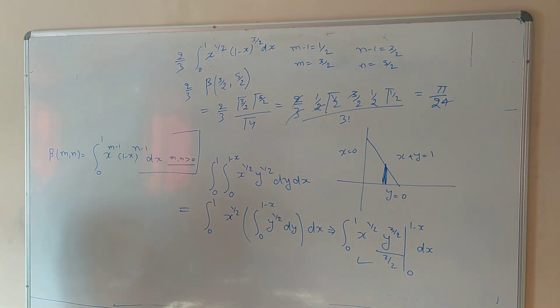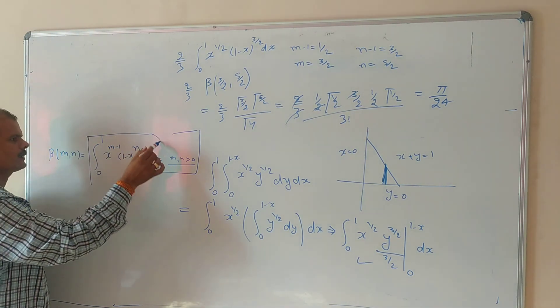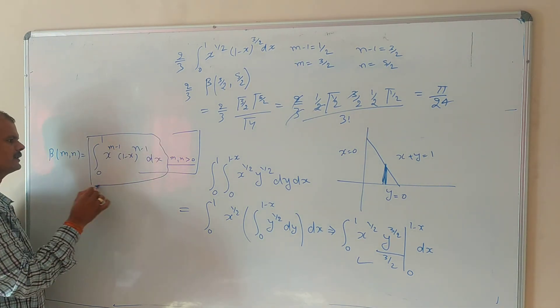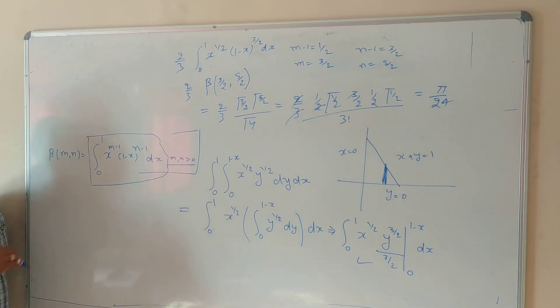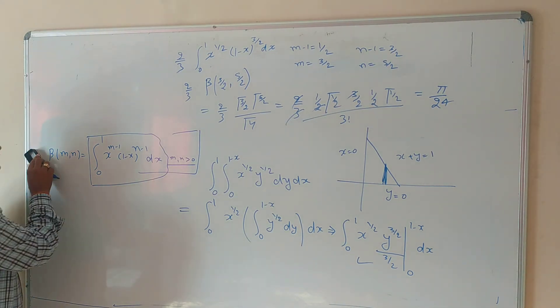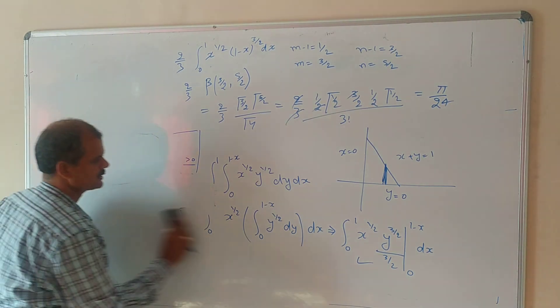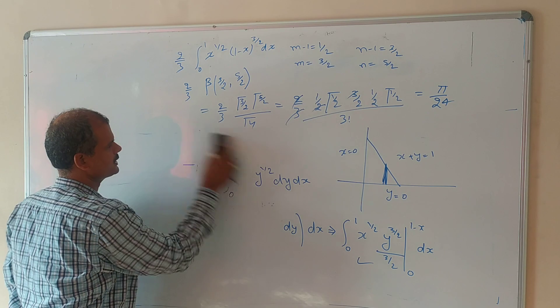So, the answer is π/24, obtained using the beta and gamma function. Directly we can get the beta function form in this way.